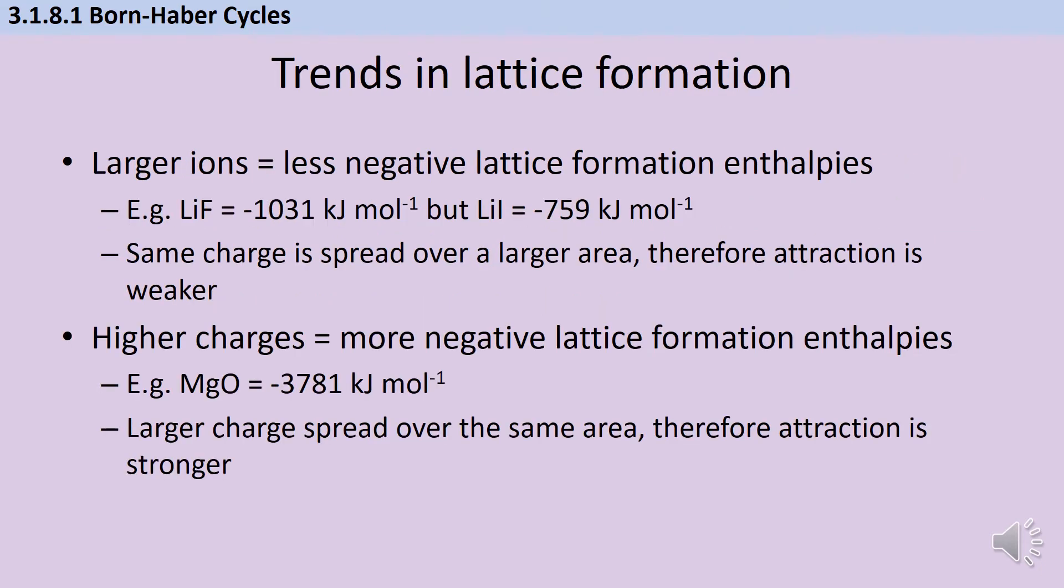Before we get into the whys and wherefores of how you can draw these cycles, let's just talk a little bit about the numbers we're expecting to get out, because these are often tied up in the same kind of question. The first rule you should know is that the larger an ion is, the less negative the lattice formation enthalpy is likely to be. Just to point it out, that is the language we need to be using. We need to be talking about these being more or less negative, or more or less exothermic. Don't say bigger or smaller, because you just won't get the mark.